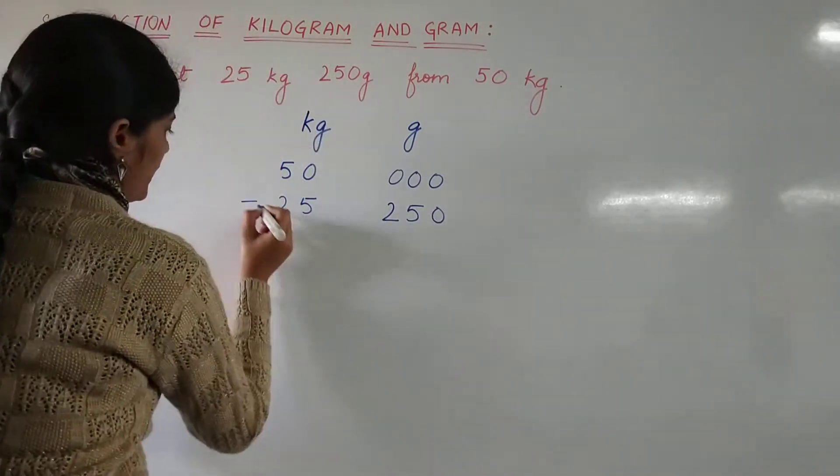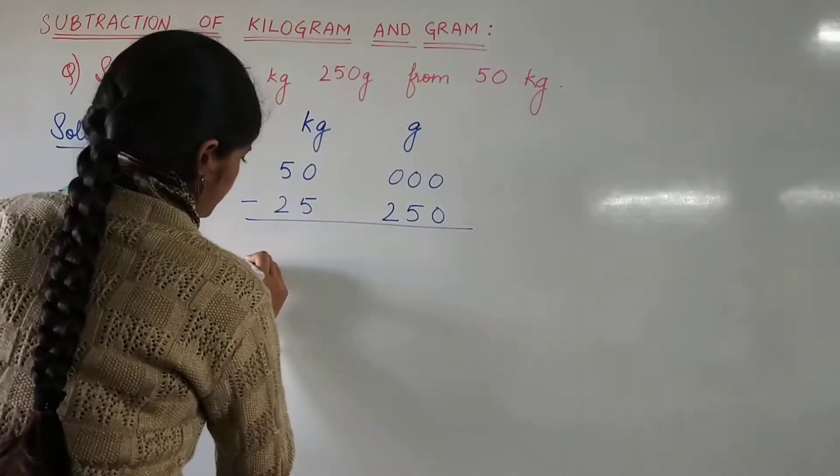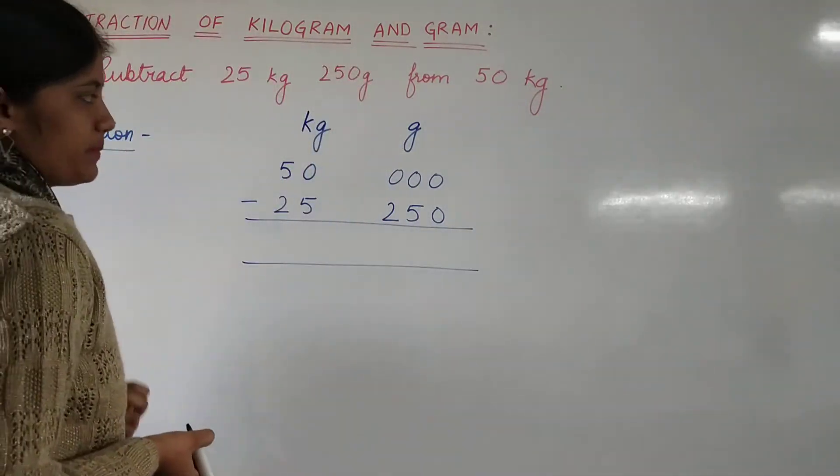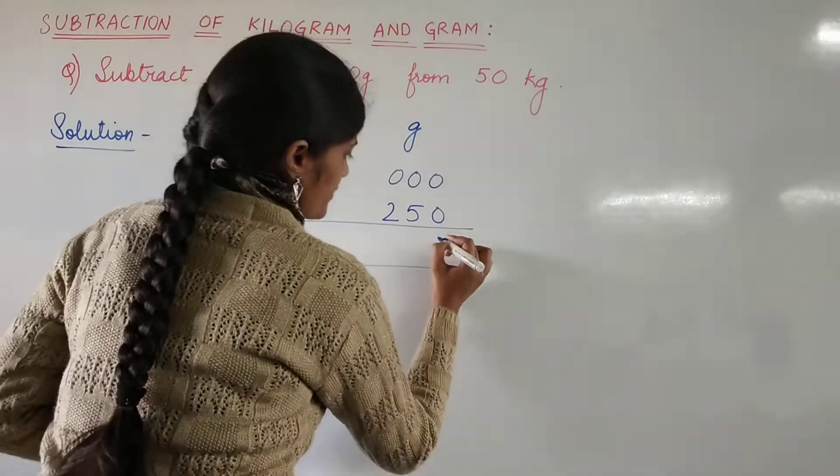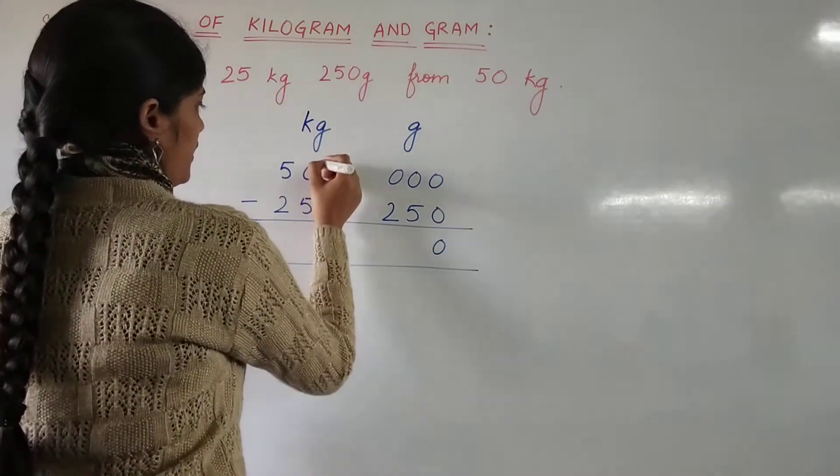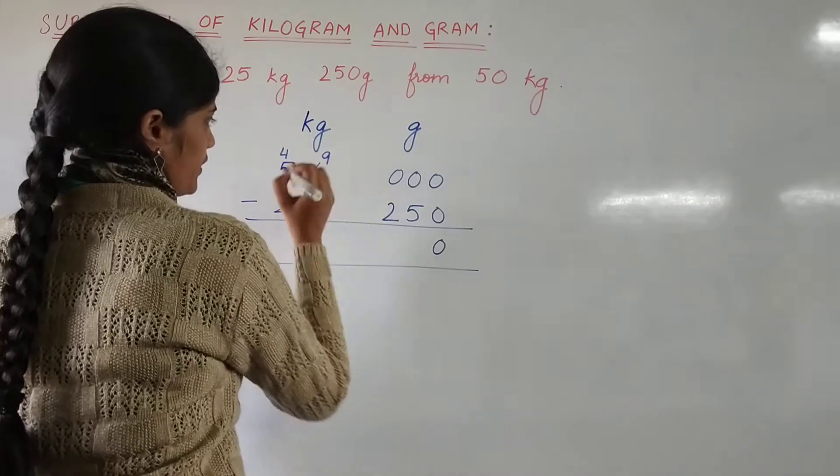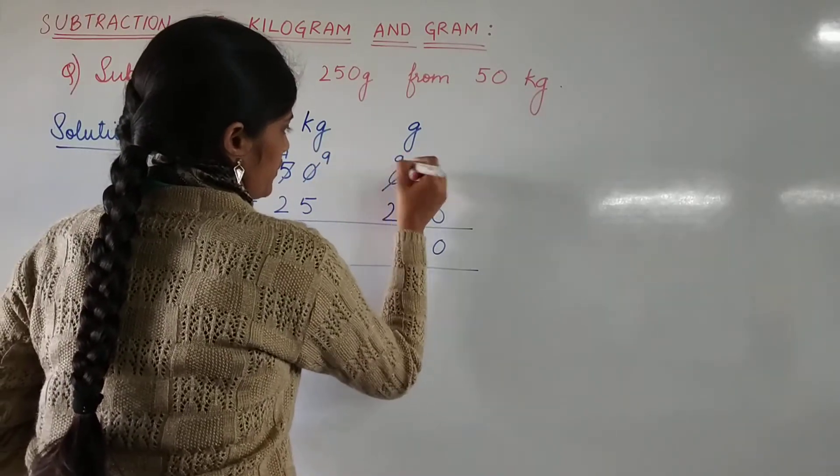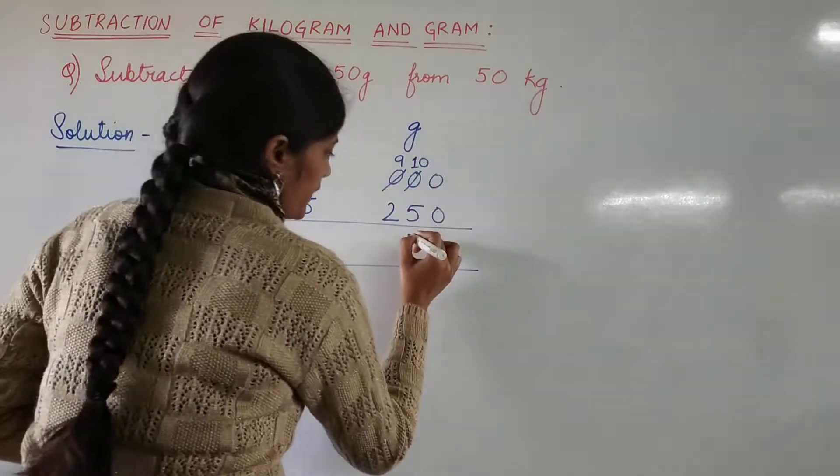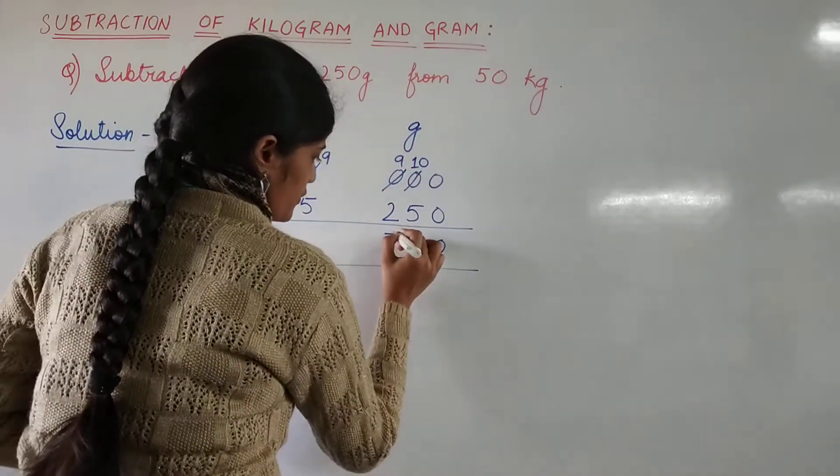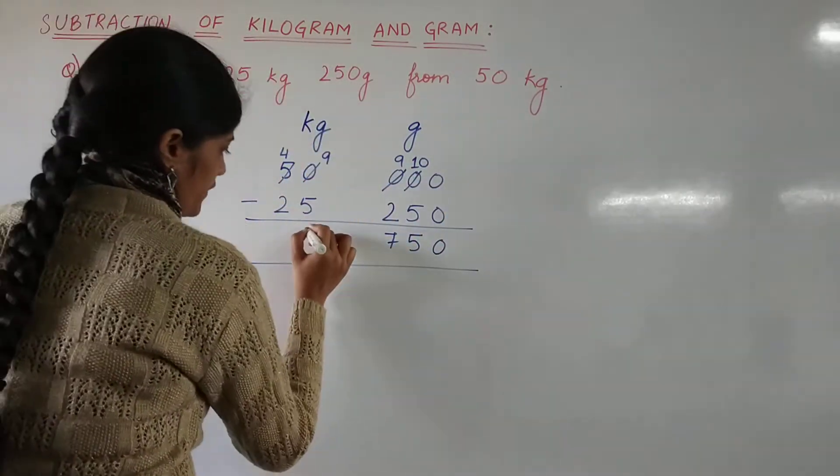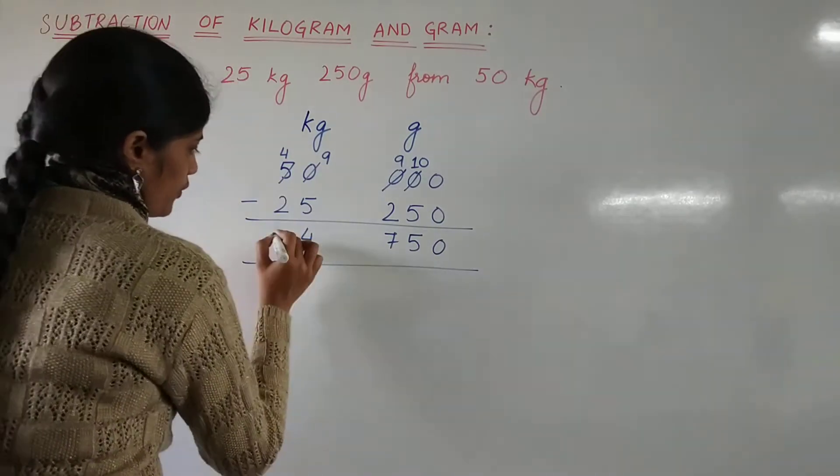Now let's subtract in the same way as we carry out simple subtraction. 0 minus 0 gives us 0. We will take carry. This 5 will give 1 to this 0. This will give 1 to this 0. This will give 1 to this 0. 10 minus 5, 5. 9 minus 2, 7. 9 minus 5, 4. 4 minus 2, 2.